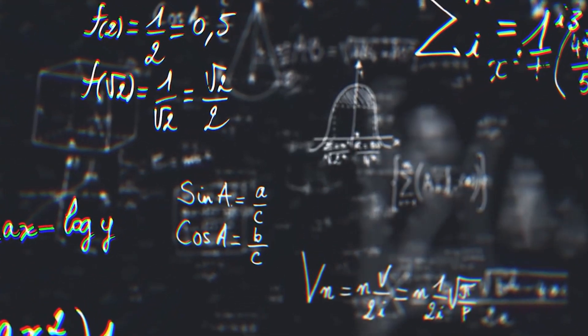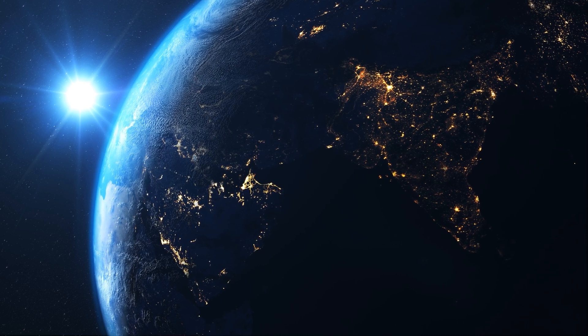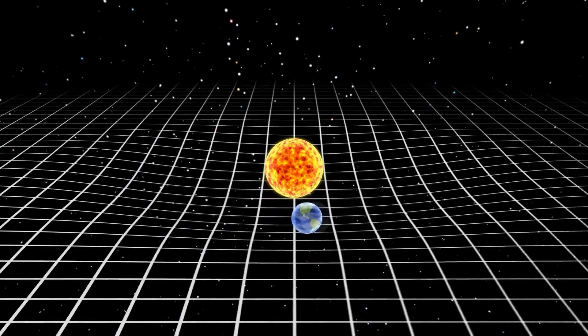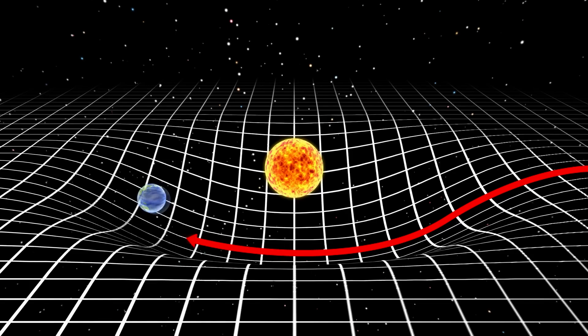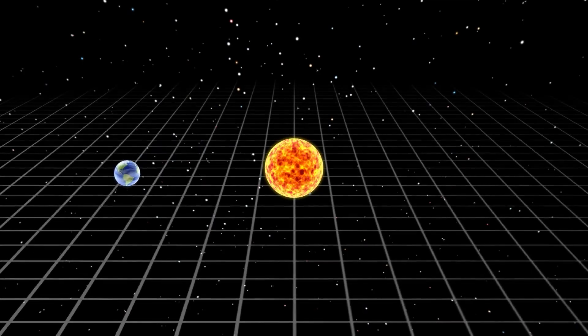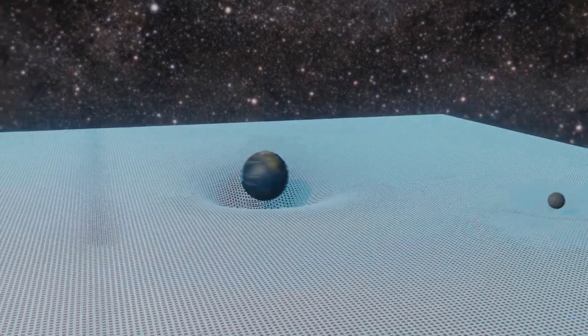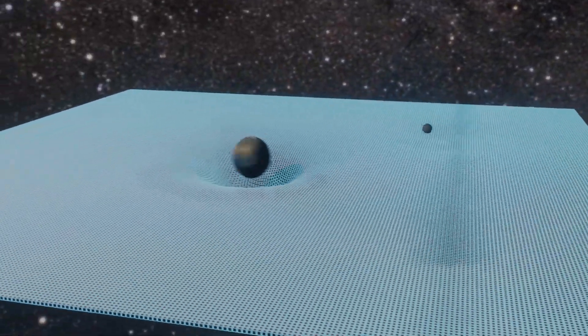Let's start with Einstein's general relativity. Over 100 years ago, Einstein introduced us to a revolutionary idea. Rather than thinking of gravity as an invisible force, he showed us that massive objects like stars and planets actually bend the very fabric of space and time around them like a ball on a trampoline. This bending of space-time is what we feel as gravity. Larger, more massive objects create stronger gravitational fields by curving space-time more dramatically.